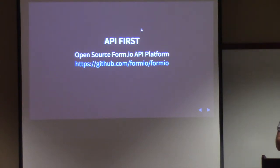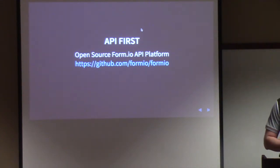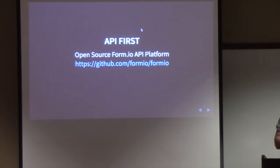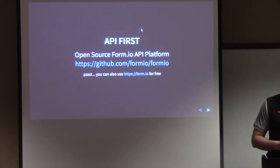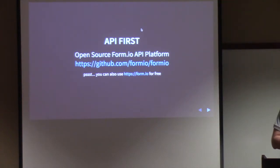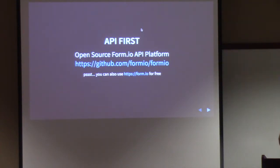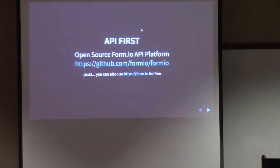We're going to use the open source FormIO API platform to build our registration system. It provides user logins, user registrations, and an easy drag-and-drop form builder interface. It is open source — you can install and run it on your local machine, extend it, and put it in your own servers. Alternatively, you can get a free account at Form.io and set up a project, making that your API. For this presentation, we'll use the open source server installed on our local machine.